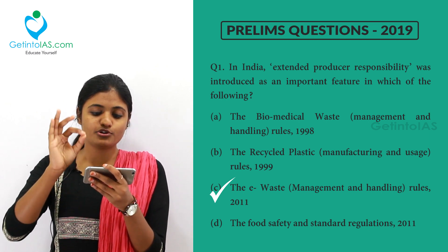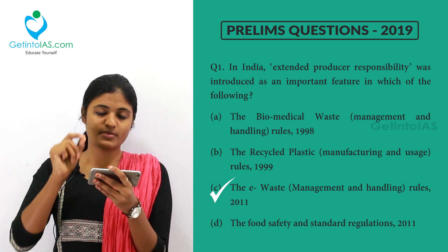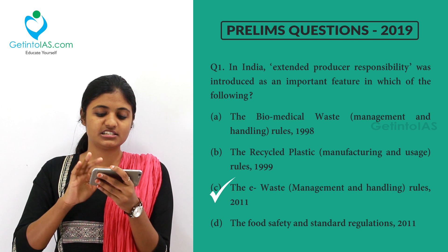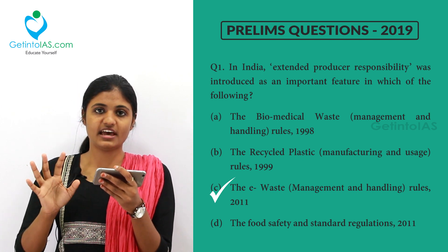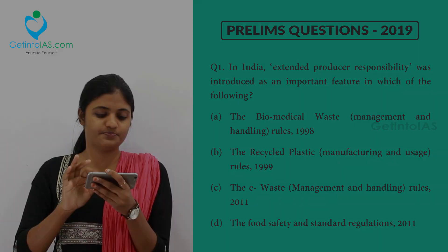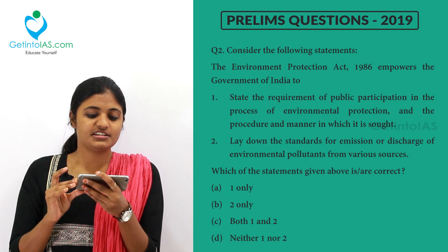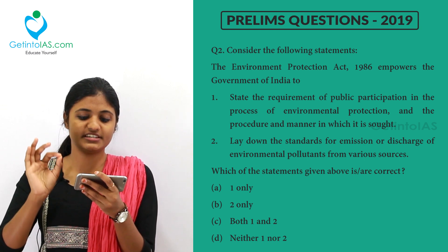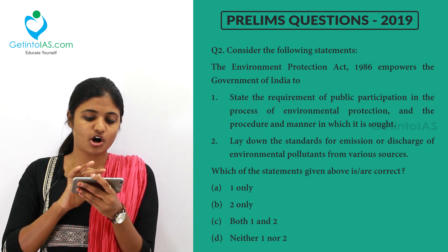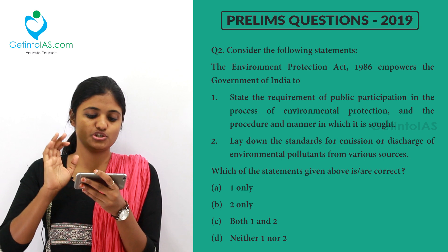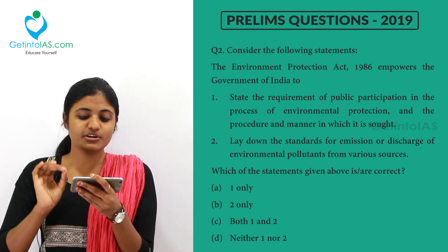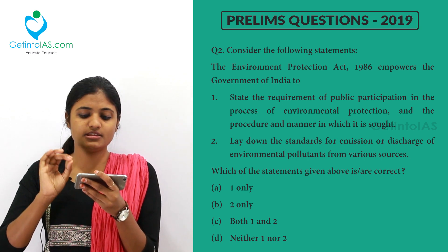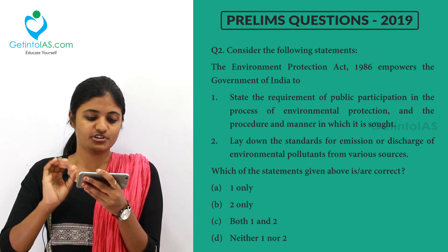Extended producer responsibility is also seen in the plastic waste management rules of 2016. So the e-waste and plastic waste management rules of 2011 and 2016 both have the extended producer responsibility. Next question — consider the following statements. The first one: the Environment Protection Act of 1986 empowers the government of India to state the requirement of public participation in the process of environmental protection and the procedure and manner in which it is sought.